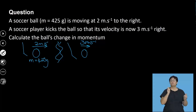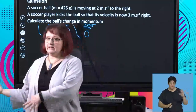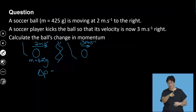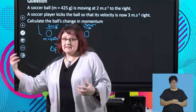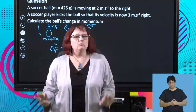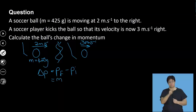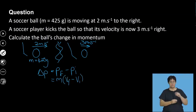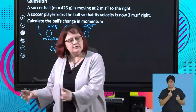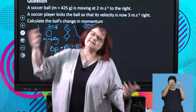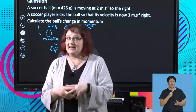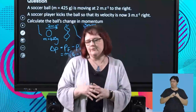They want the change in momentum — not force, not any of those. They want change in momentum, which is final minus initial. You can do this by working out the final momentum, the initial momentum, and then subtracting the two. But we can also use the equation where we take mass times final velocity minus initial velocity. I'm going to do it that way because I'm doing fewer equations and I'm less likely to make a mistake.